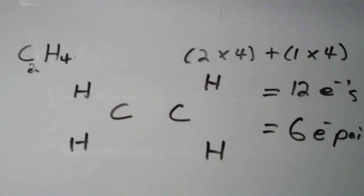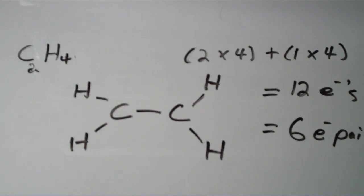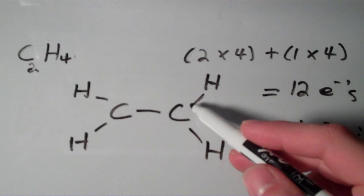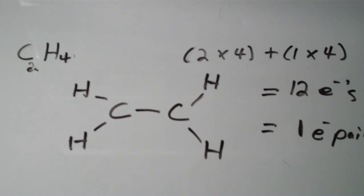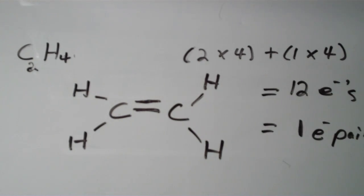Now we have to distribute the electron pairs. The first step is to place two electrons between every two atoms. In doing so, we've used up five of our six valence electron pairs, so now we're down to just one. If I put a lone pair on a carbon, I won't get an octet. So instead I'm going to add the last pair in the bonding region between the two carbons to form a double bond. That gives an octet to both carbon atoms, and all the hydrogens have duets throughout. This is the correct Lewis structure for C2H4 — we call that ethylene.